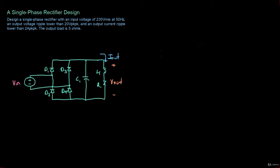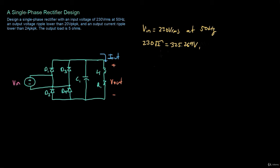I've drawn a full wave rectifier with a capacitor for voltage filtering and an inductor for current filtering. The input voltage VIN is 230 volts RMS at 50 Hz. The peak input voltage is VIN × √2, which equals 325.269 volts. The angular frequency ω = 2πF = 2π × 50 = 314.159 radians per second.